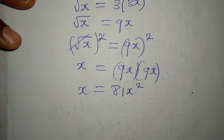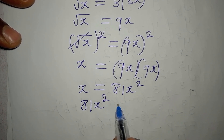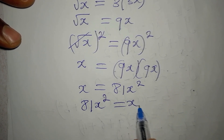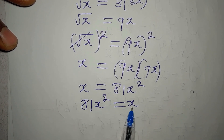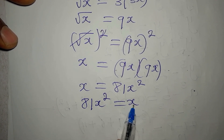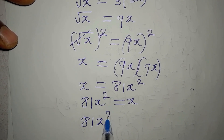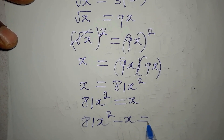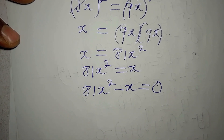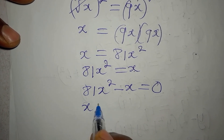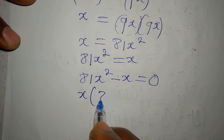The term with the highest power comes first, so we have 81x squared equal to x. To avoid dividing both sides by x, we bring x to the left: 81x squared minus x equals zero. Now we can factorize — x is a common factor.